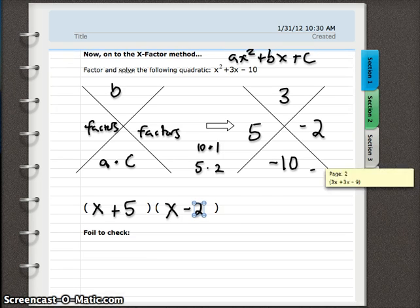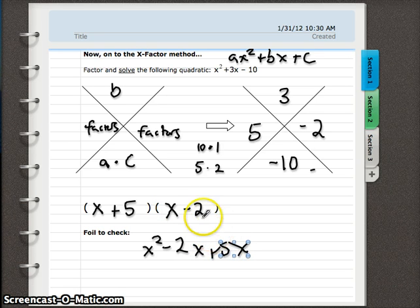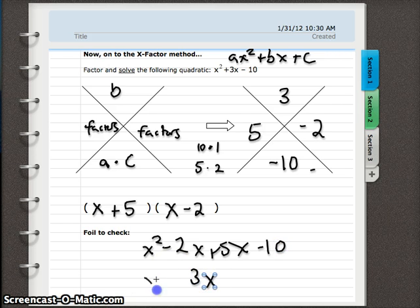We could FOIL to check and make sure we did it right. x times x is x squared. Outside, x times negative 2 is negative 2x. Positive 5 times x is positive 5x. And 5 times negative 2 is negative 10. Combine our middle terms here with negative 2x plus 5x, it's 3x. So x squared plus 3x minus 10. Is that what we started with? Yep. We factored it correctly.